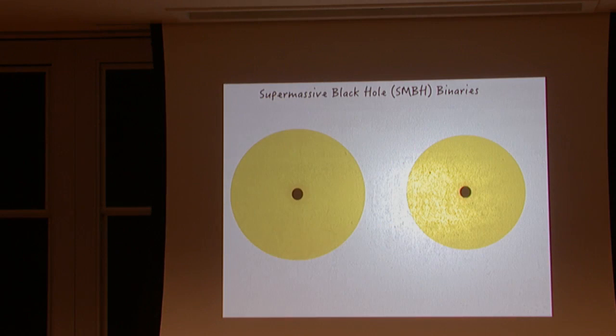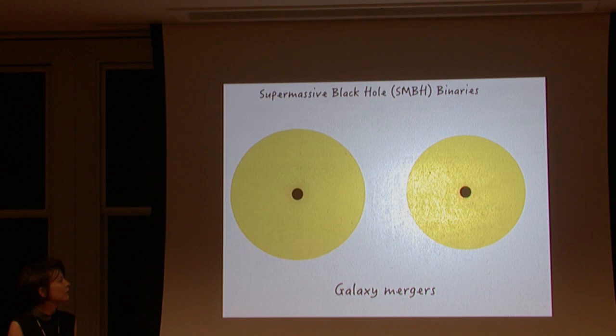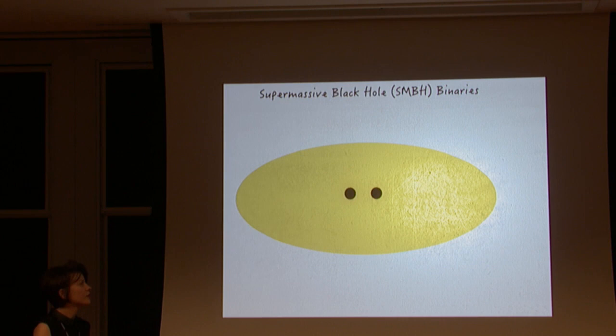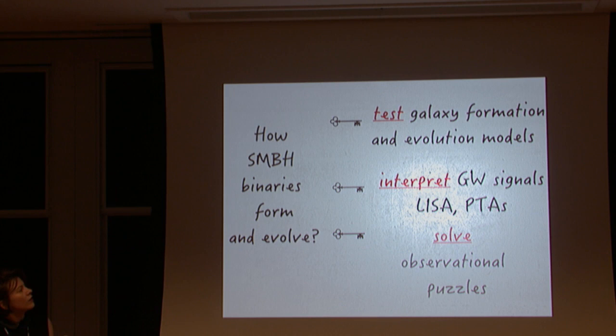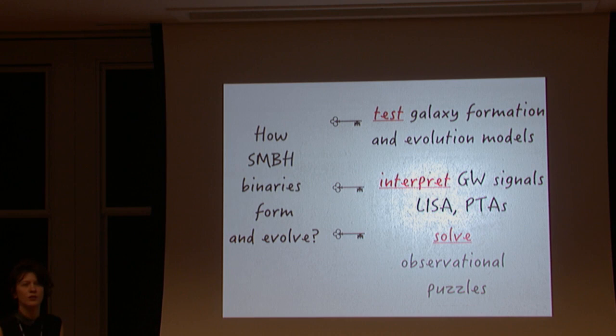Supermassive black hole binaries form through galaxy mergers. Understanding their evolution is not only a key test of current models of galaxy formation and evolution, but also key to interpreting the gravitational wave signals observable in the future by LISA or by pulsar timing arrays.